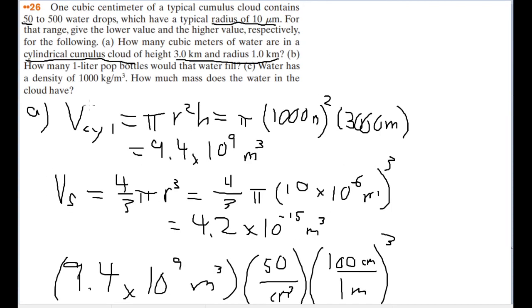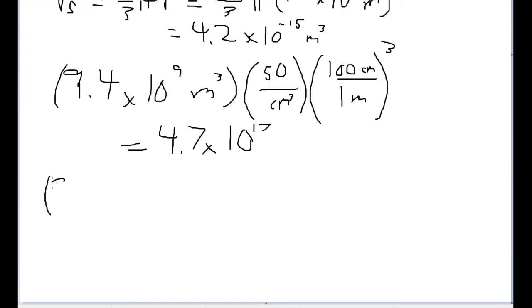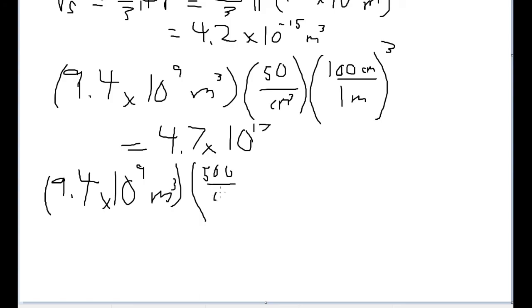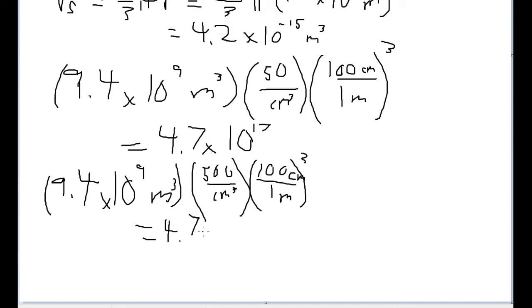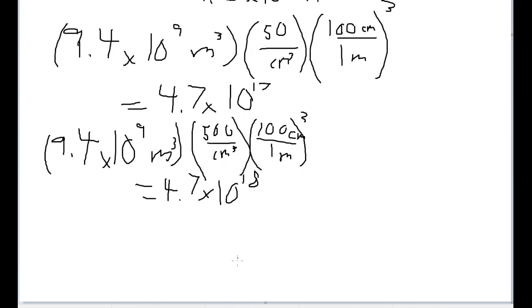Now for the upper bound using 500 drops per cubic centimeter: 9.4 times 10 to the ninth cubic meters, multiplied by 500 drops per cubic centimeter with the same cubic centimeter-to-meter conversion, gives 4.7 times 10 to the 18th drops. So the number of drops in the cylinder ranges between 4.7 times 10 to the 17th and 4.7 times 10 to the 18th.